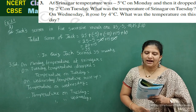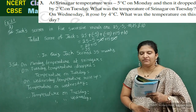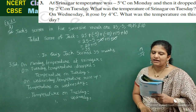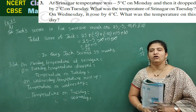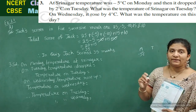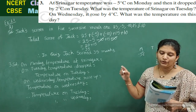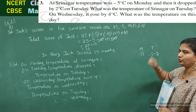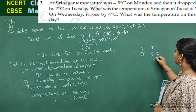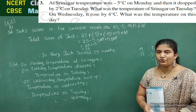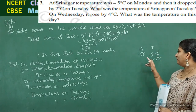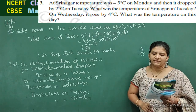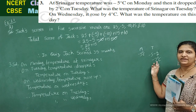Third question: at Srinagar, temperature was minus 5 degrees Celsius on Monday. On Tuesday, it dropped by 2 degrees Celsius. Dropped means reduced, so both are negative — take the negative sign and add. Minus 5 minus 2 equals minus 7 degrees Celsius. The temperature of Srinagar on Tuesday is minus 7 degrees Celsius.